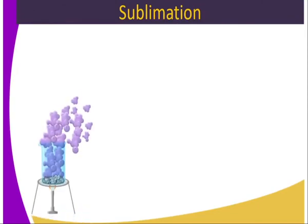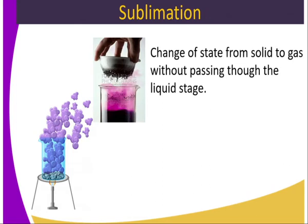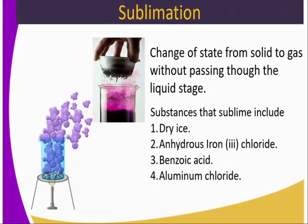We also have sublimation. For instance, iodine — when you heat iodine, it changes state from solid to gas without passing through the liquid stage. This direct change of state from solid to gas is what we refer to as sublimation. If a substance sublimes, this method can be used to separate that kind of mixture. Substances that sublime include dry ice, anhydrous iron(III) chloride, benzoic acid, and anhydrous aluminium chloride.